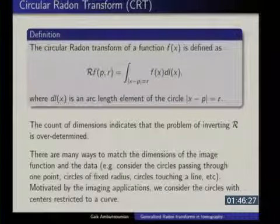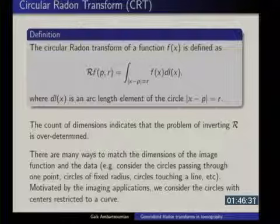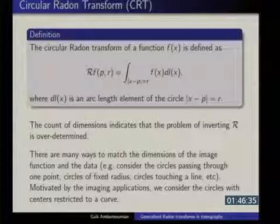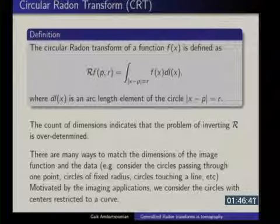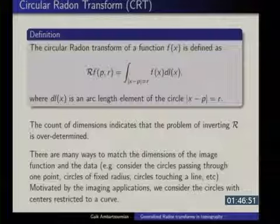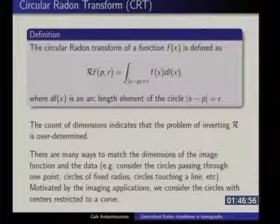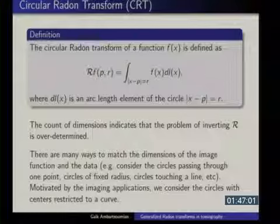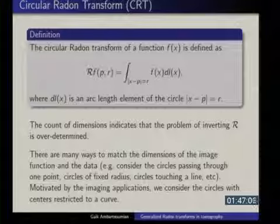We'll talk about the injectivity results and also about the inversion formulas for the circular Radon transform. We have this transform that takes a function — you can think about the function defined on the plane, the two-dimensional version — but some results hold in R^n. In applications, the important ones are 2D and 3D, but for pure mathematical reasons you can think of the same problem for functions defined in R^n. We are trying to recover a function from its integrals along circles on the plane, or spheres, or hyperspheres, depending on the dimension.